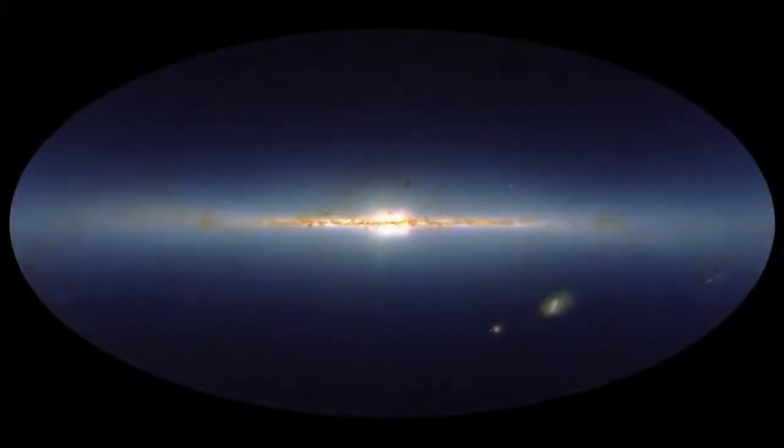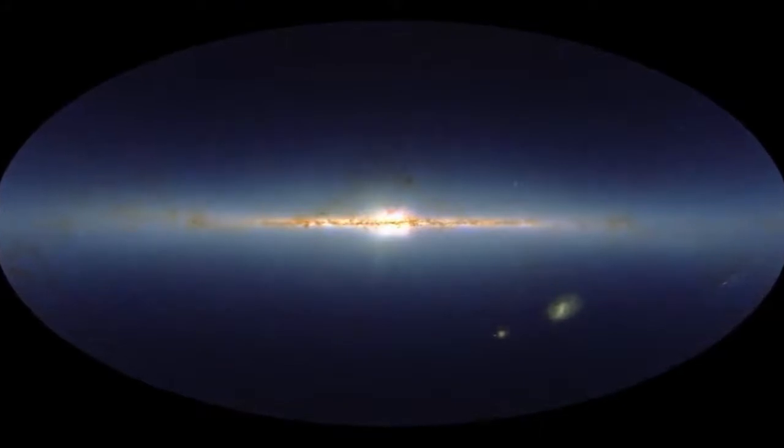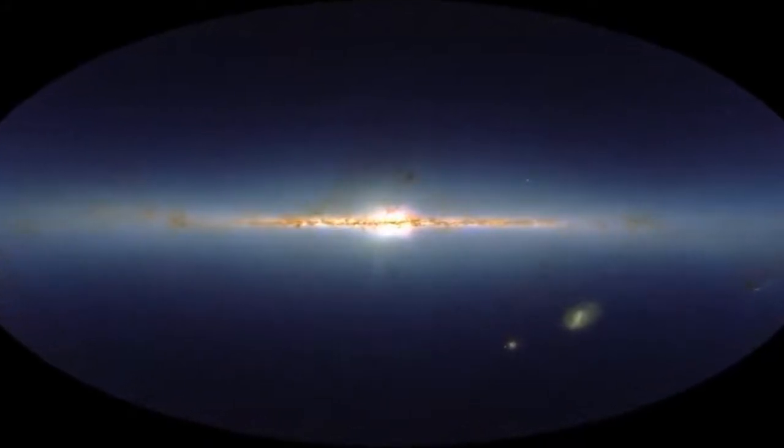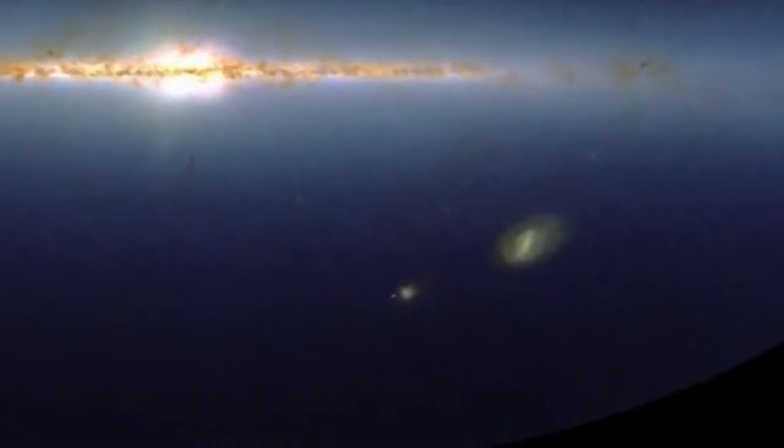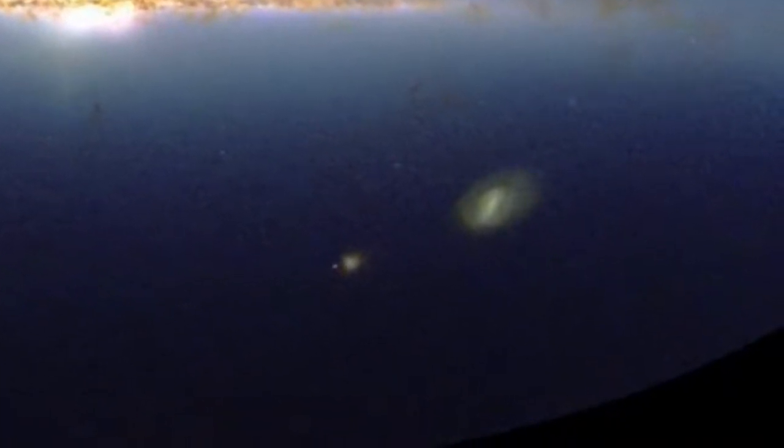This infrared image of the entire sky shows half a billion stars. Most are in our galaxy. Some are not. These are companion galaxies that orbit our Milky Way.